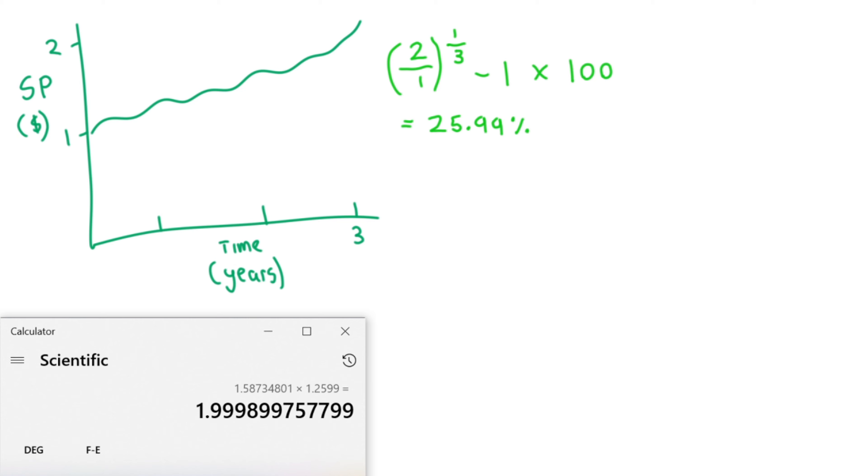But let's imagine the scenario where it started at $1, fell to 50 cents after the first year, then miraculously rebounded to $2 by the end of the third year. Its CAGR would still be 25.99%, in spite of the intraperiod swings in value of this stock, and that is an important further use case of the CAGR.